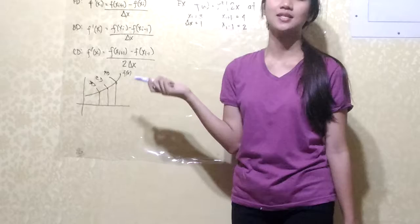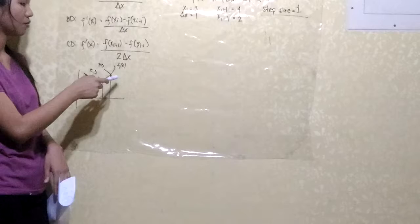So if we plot it here, you can see that for the forward difference that would be from here, the central difference would be in the middle, and the backward difference would be in the back.